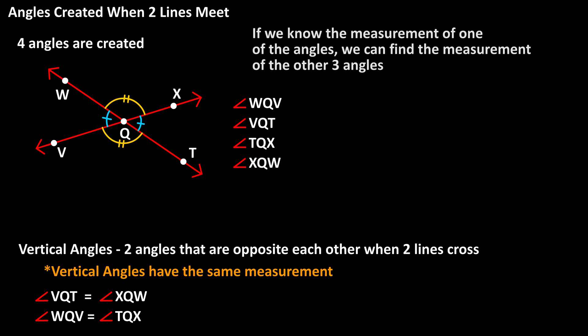If we know the measurement of one of the angles, then we can find the measurement of all three of the other angles. If we're given that angle WQV equals 50 degrees, because vertical angles or opposite angles have equal measurements, then angle TQX will also equal 50 degrees.